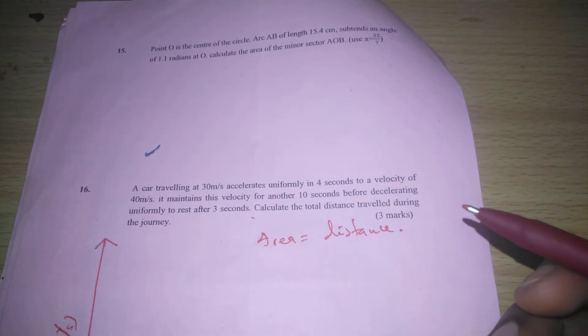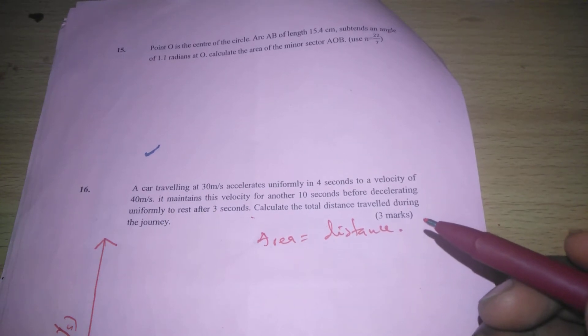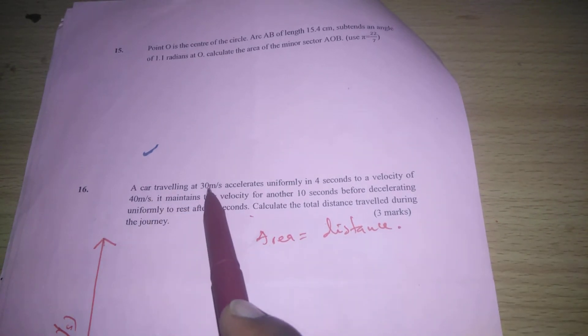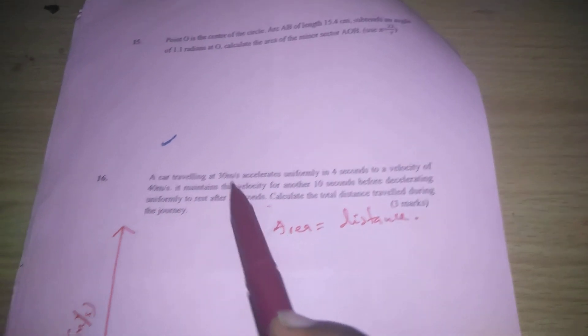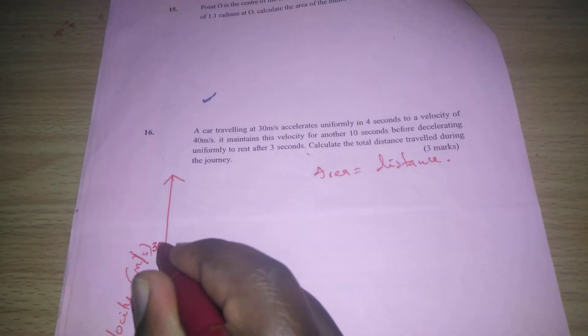For us to know the distance covered by this car, we can sketch the velocity time graph. We are told that it starts at 30 meters per second. Initially, it is at 30 meters per second.